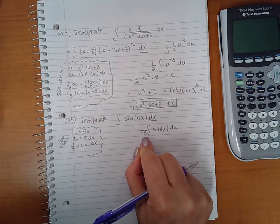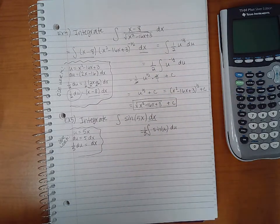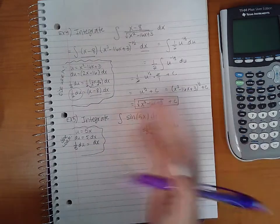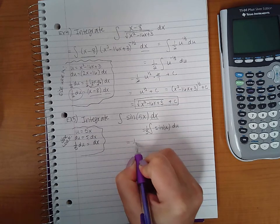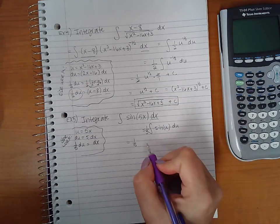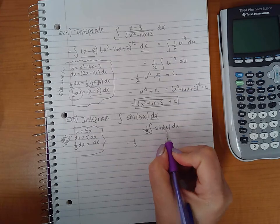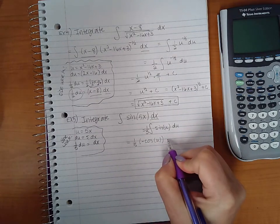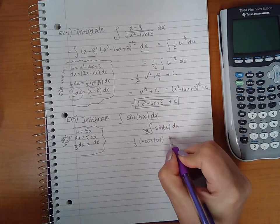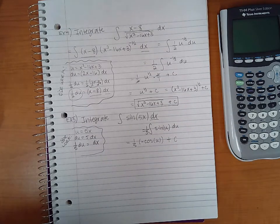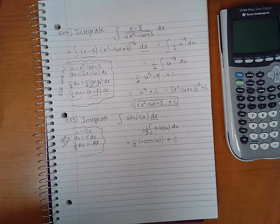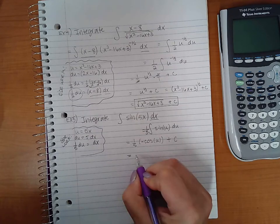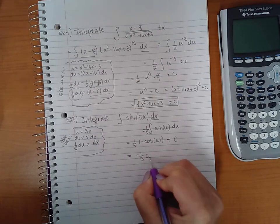Now I'm just integrating the sine of u. The integral of sine of u is negative cosine of u, and since I've applied the integration rule, now I add the plus C. This simplifies to negative one fifth cosine of u plus C.